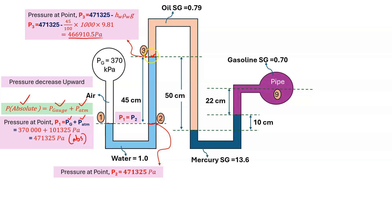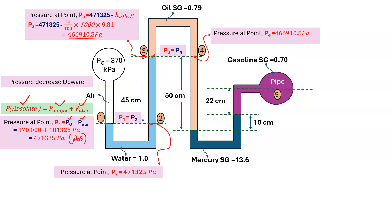Now we draw the two-fluid interface horizontal line to the other column. Since one liquid must be continuous, pressure at the same fluid and same reference line will be equal. So P3 equals P4, and pressure at point 4 is 466,910.5 Pascal.